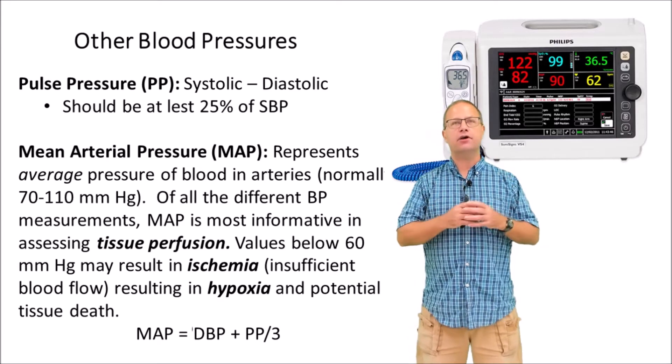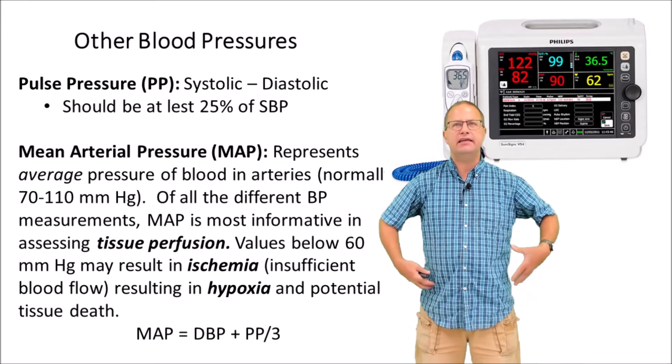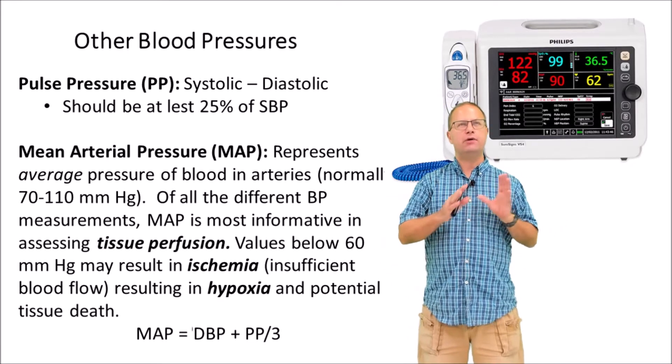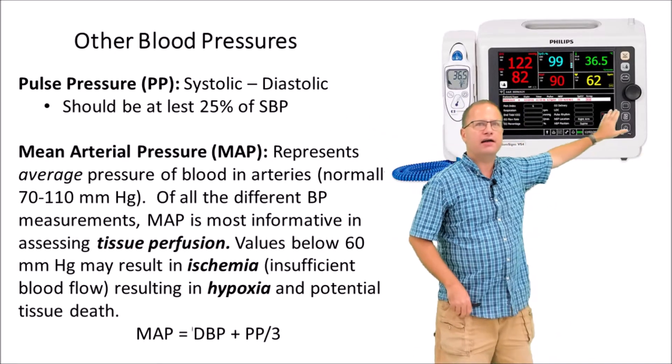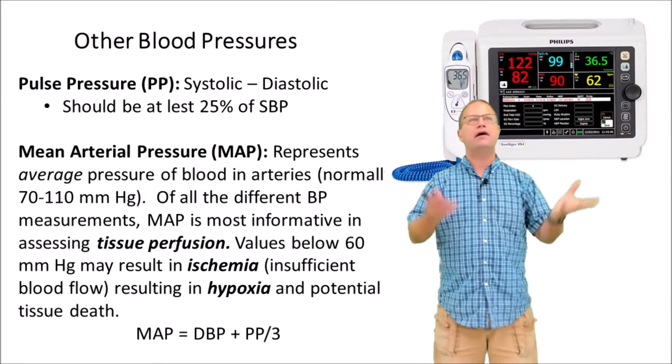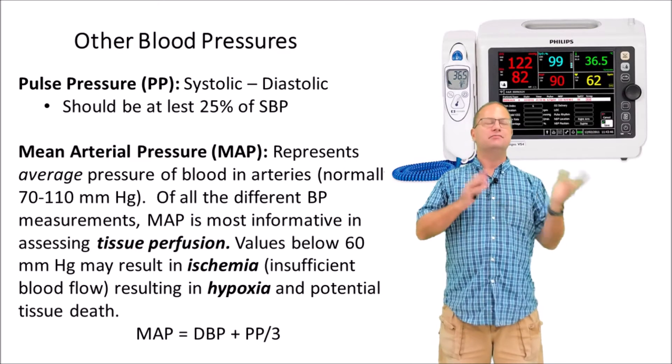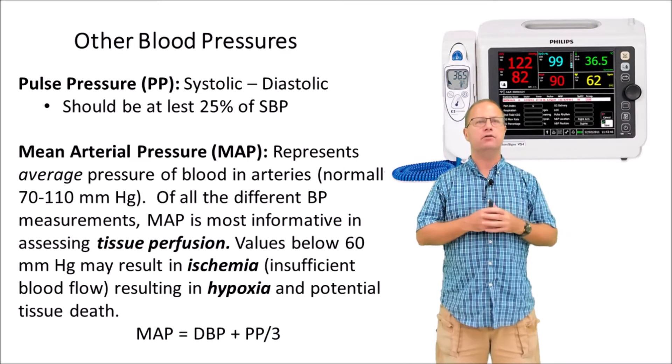This happens very quickly in very sensitive organs like the kidney and the brain. We always want to make sure that we have our MAP, which is up here on the vital signs monitor, around the area of 90 or above. 70 would be fine too, but we don't want to go lower than 70.